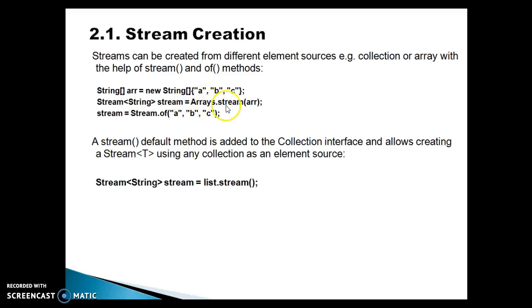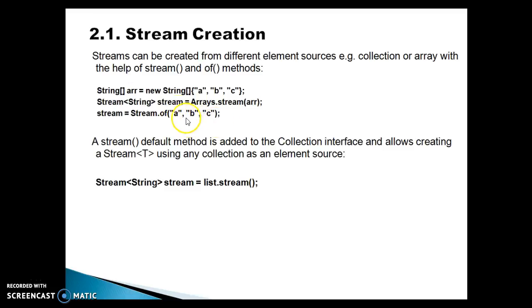Arrays has a method called stream, and this method accepts different kinds of arrays — you can pass an integer array or any kind of object array. We are passing a stream array to the stream API, and this gives us the stream. Also, the stream class in java.util.stream package has a method called 'of', which accepts any kind of object array, so directly you can pass elements and this will give you the stream itself.